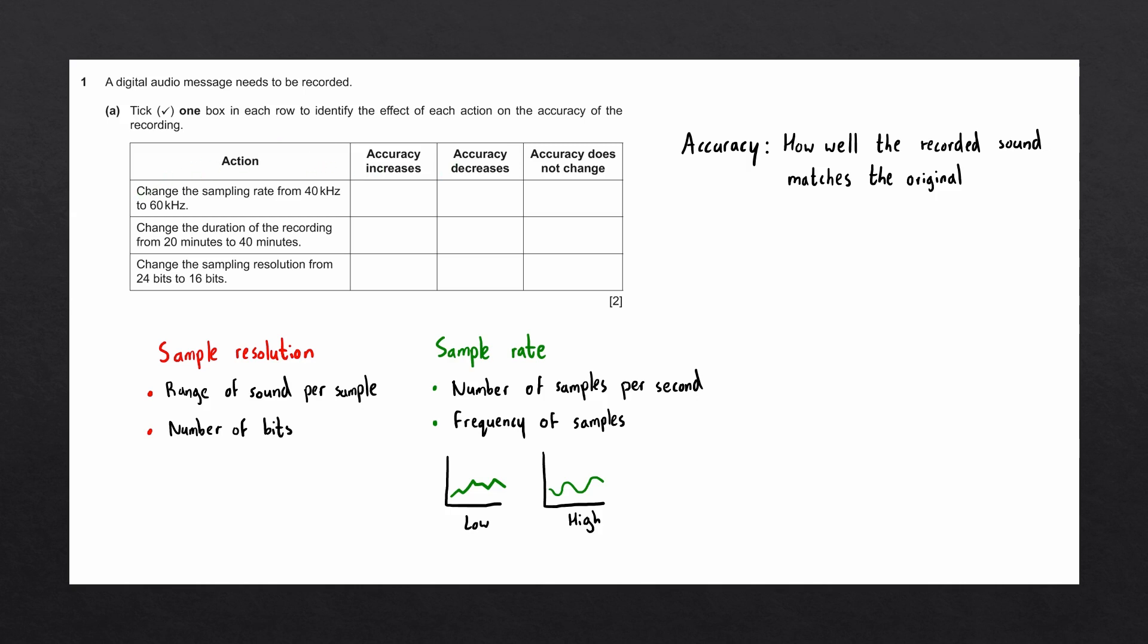The first action says to change the sampling rate from 40 kilohertz to 60 kilohertz. Kilohertz is the unit of measurement for frequency that's used when we describe the sampling rate of a sound. One kilohertz is equal to a thousand hertz.